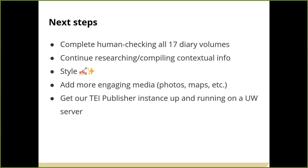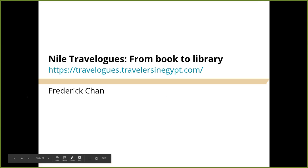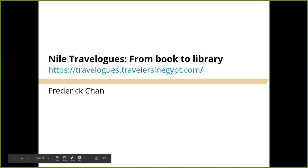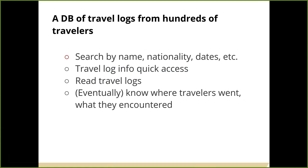Hello, my name is Frederick Chan. I'm the developer for Nile Travelogues, and today I'm going to talk about how I made the Nile Travelogues database using a single book and turned it into a library where you can read travelogues from people who went to the Nile in the golden age of Egyptology. The goal of the database is to be able to search through all of these travelers and publications by name, nationality, and any attributes helpful for research. We also want to be able to read them and eventually know where travelers were going and what they encountered, giving a broader context for these travelogues.